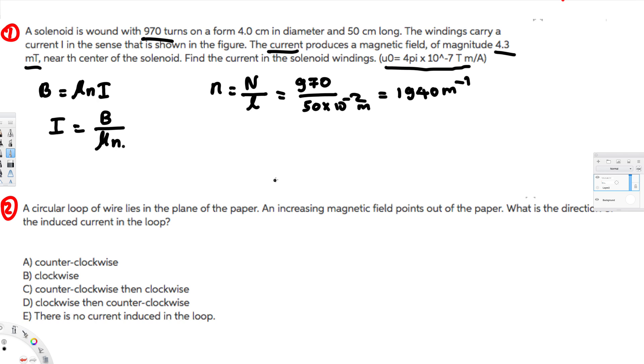Now we have everything to calculate the current. We plug these values: B is 4.3 millitesla, so 4.3 times 10 to the power of minus 3 tesla. Milli is 10 to the power of minus 3. Then we have the permeability constant 4π times 10 to the power of minus 7 tesla meter per ampere, and multiply by n which is 1940 meter minus 1. If you calculate this, that gives you 1.7638 ampere.